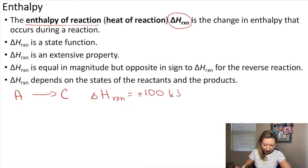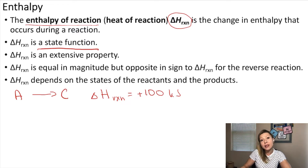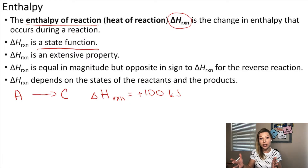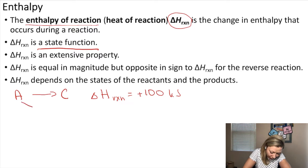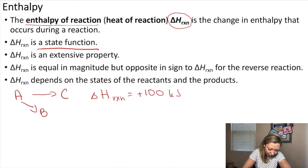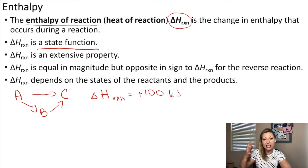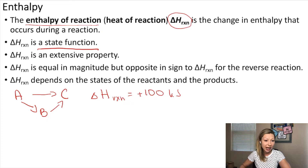We also learned previously that enthalpy is a state function. This means that you can take several steps to get to the product from the reactant. For example, you can get from A to C directly, or first you can form B in one reaction and in the second reaction go from B to C. And the change in enthalpy will be the same, no matter which route you are taking.